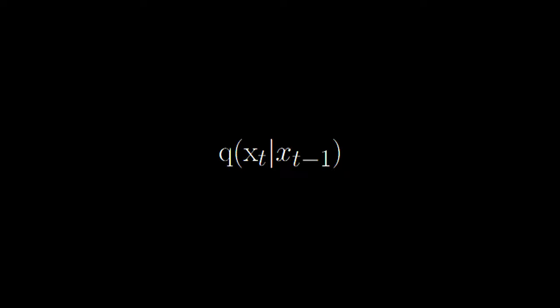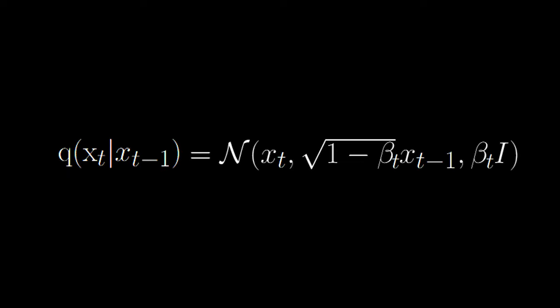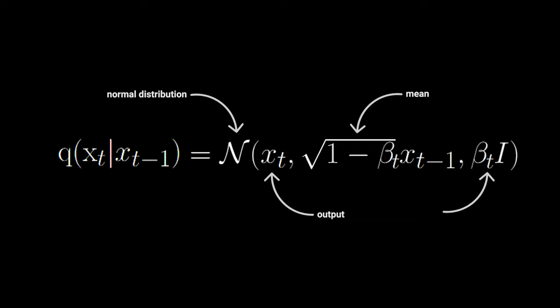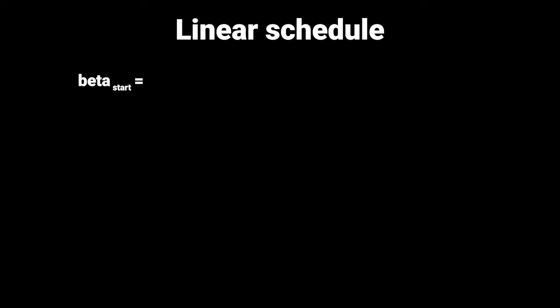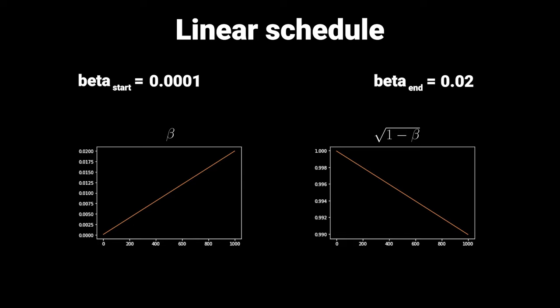q given x_t will be defined as a normal distribution where x_t is the output, the mean is √(1−β_t)·x_{t-1}, and the variance is β_t·I. Beta refers to the schedule — all betas range between 0 and 1 and ensure the data is scaled so the variance doesn't explode. The 2020 paper defined the smallest beta to be 0.0001 and growing linearly up to 0.02. Plotting both beta and √(1−β_t) against time shows that we increasingly scale down the image, which acts as a counterpart for the increasing variance, keeping it in bound.